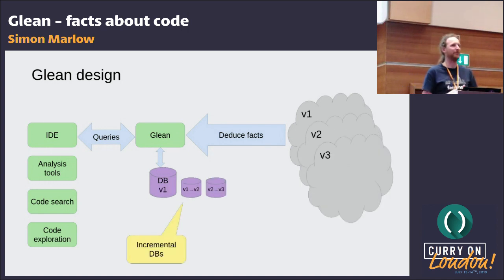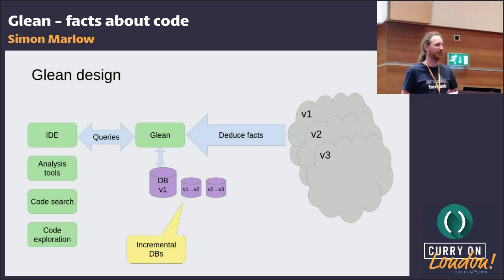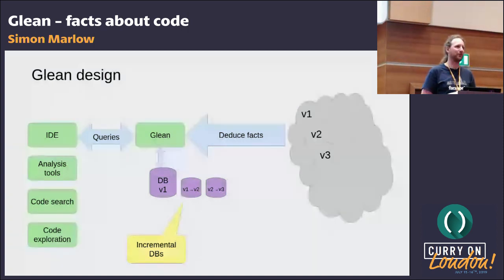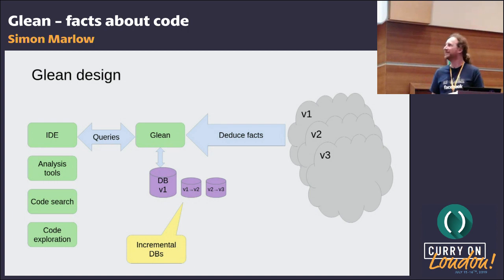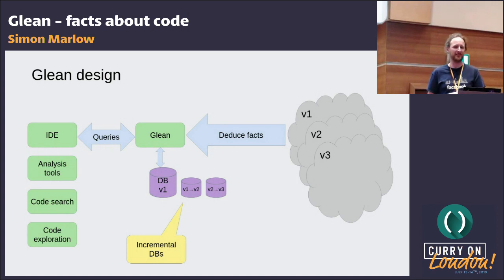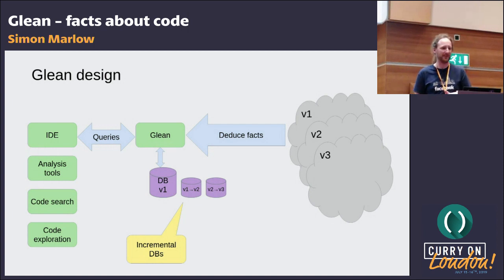Thinking about the problem of many versions of your code: the facts Glean stores are just immutable things, which means we can have incremental additions to a database that add or delete facts. Our eventual vision is to support multiple versions of the repository by having incremental databases that store changes to the facts.